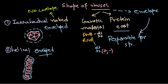In icosahedral naked type viruses, it may contain any type of genetic material — single-stranded DNA, double-stranded DNA, single-stranded RNA, or double-stranded RNA — but only one type at a time. A virus containing double-stranded DNA should not also have RNA. In icosahedral enveloped type viruses, they usually do not have single-stranded DNA; they typically have double-stranded DNA, single-stranded RNA, or double-stranded RNA.